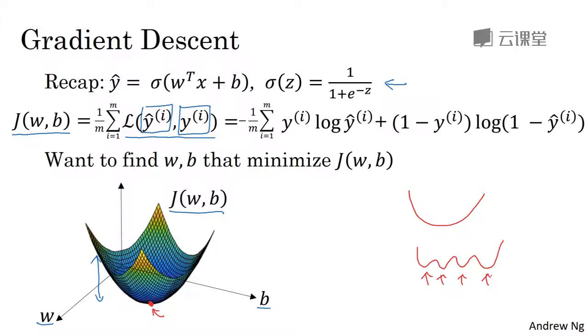So to find a good value for the parameters, what we'll do is initialize w and b to some initial value, maybe denoted by that little red dot. And for logistic regression, almost any initialization method works. Usually you initialize the values to zero. Random initialization also works, but people don't usually do that for logistic regression. But because this function is convex, no matter where you initialize, you should get to the same point or roughly the same point. And what gradient descent does is it starts at that initial point and then takes a step in the steepest downhill direction.